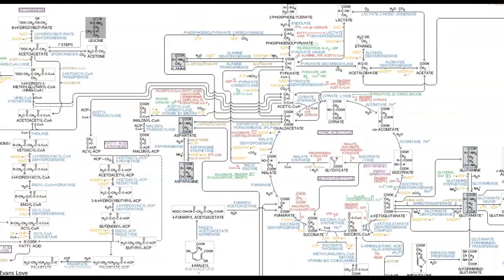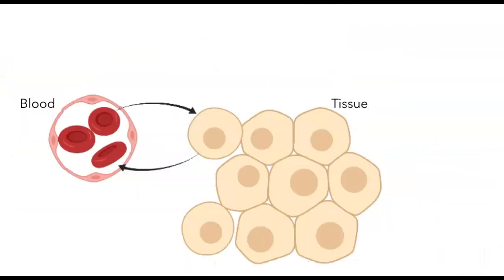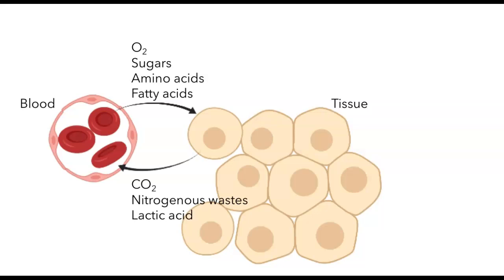We don't have time to talk about every single pathway in the cell, so I'm going to focus on some key pathways seen in many organisms that are really key for understanding physiology. Here I've switched to a much bigger scale — now we're looking at whole cells. On the left we've got a capillary full of blood cells, delivering nutrients to the tissue. Things present in the blood include gases like oxygen, and small molecules like sugars, amino acids, and fatty acids delivered from the digestive system or the lungs. Those cells in the tissue take it up and produce waste products like carbon dioxide, nitrogenous waste, or lactic acid, which gets sent through the blood to other tissues.